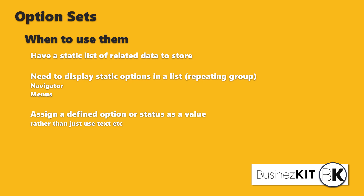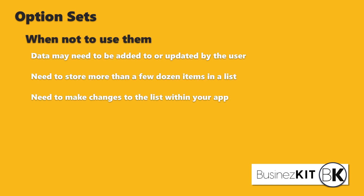When should you NOT use option sets? If at any point the data may need to be added to or updated by the user, don't use them - option sets are static lists downloaded with the app, not stored in your database. If the list of options or statuses needs to be dynamic, you'll need to use a data type instead. For example, if you're storing departments and an admin might need to add new ones through the app itself, use a data type.